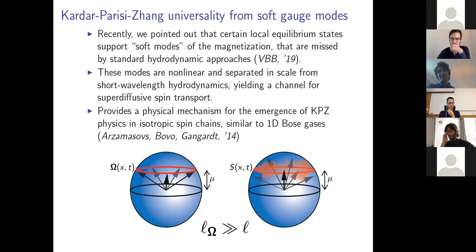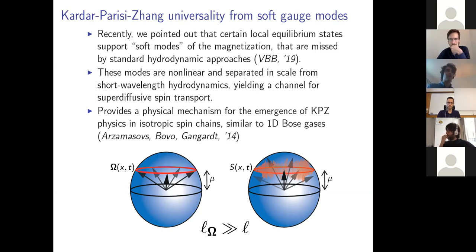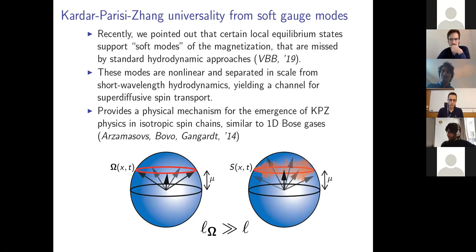I'm going to argue that this missing ingredient is precisely these long-wavelength coherent excitations of spin. These modes have a non-linear self-coupling and are separated in scale from the short-wavelength hydrodynamic theories, which allows for a channel for superdiffusive spin transport. The physical mechanism — long-wavelength excitations coupled to a short-wavelength quasi-particle bath — is actually very similar to a mechanism arising in a completely different context, namely 1D Bose gases.